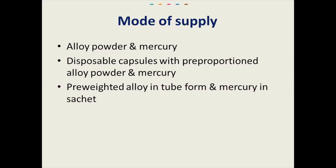Now we will see how silver amalgam alloy and liquid mercury is supplied. The mode of supply: it is available as powder and liquid mercury. It can be available in disposable capsules with proportioned alloy powder and mercury. Pre-wetted alloy in tube form and mercury in sachets are also available.